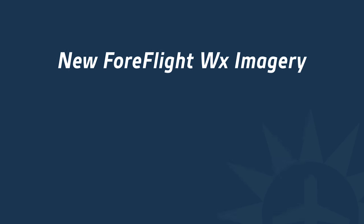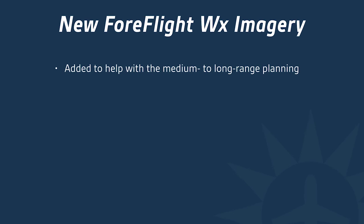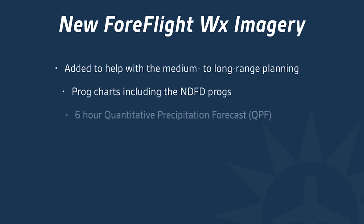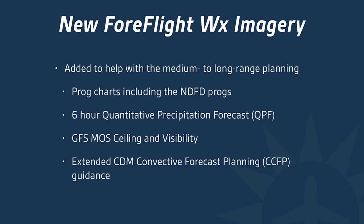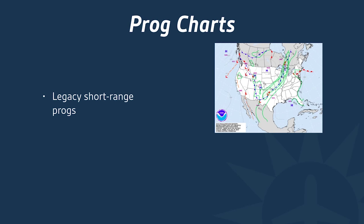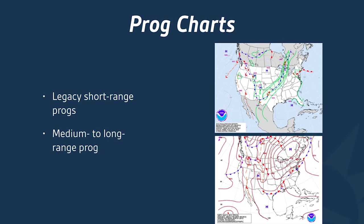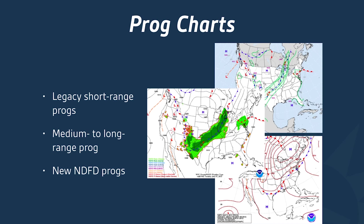Now let's look at the new ForeFlight weather imagery, added to help with medium to long-range flight planning. It includes prog charts — including new NDFD progs — a six-hour quantitative precipitation forecast or QPF, a GFS MOS ceiling and visibility forecast, an extended convective forecast planning guidance, and a 12-hour probability of precipitation or POP forecast. The legacy prog charts are still available, and we've added medium to long-range progs from day three through day seven.